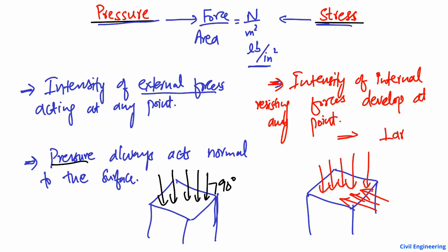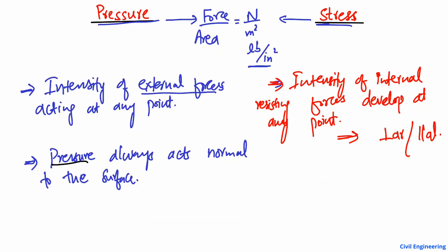But stress can be either perpendicular or parallel to the surface. So for stress, the internal resistance can be at 90 degrees to the surface or at zero degrees — meaning it can act in both directions. This is the second difference.